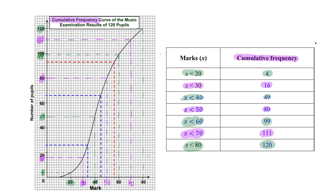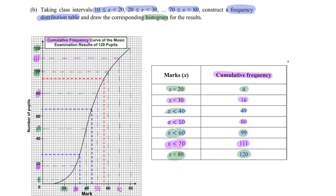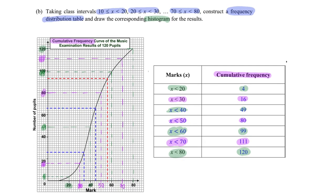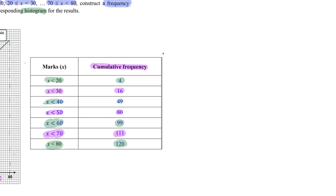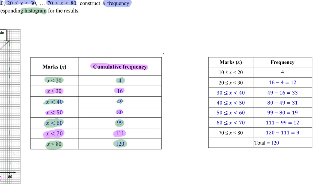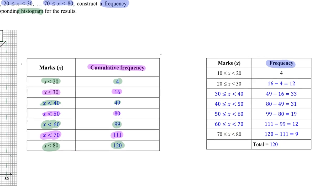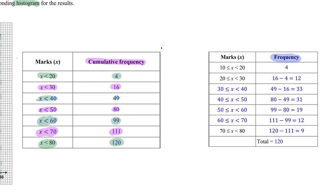We have successfully constructed the cumulative frequency table, but the question requires a histogram, which requires a frequency table. Now I'm going to explain how to get the frequency table from the cumulative frequency table. For the interval 10 to 20: since less than 20 gives 4, and this is also the starting interval, the frequency is 4.